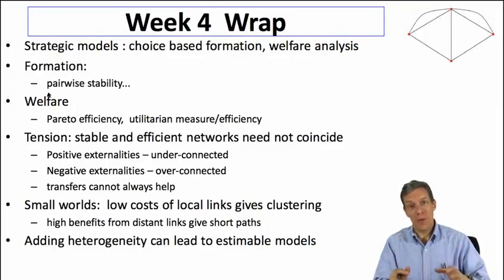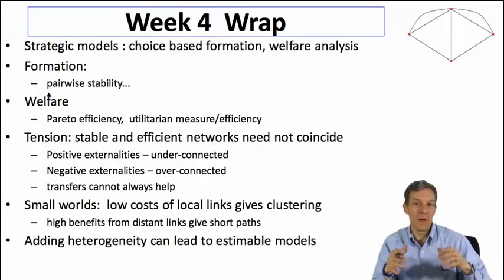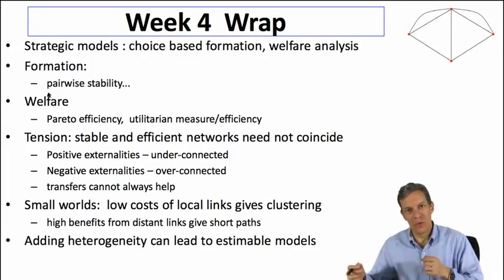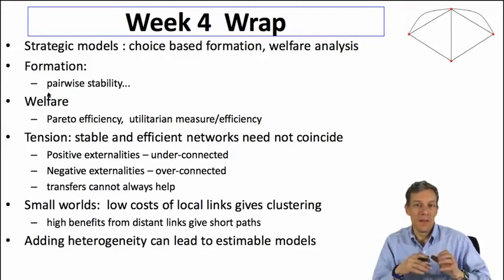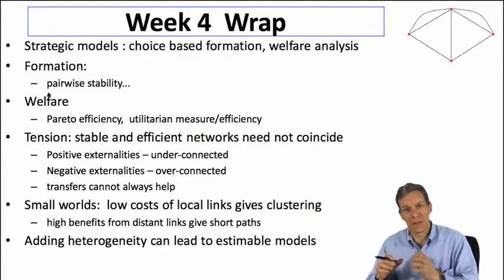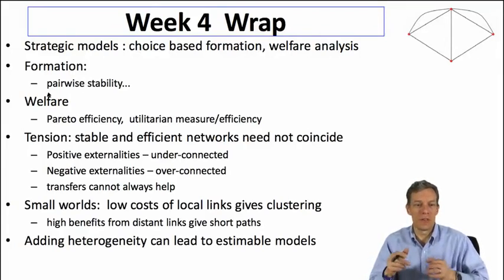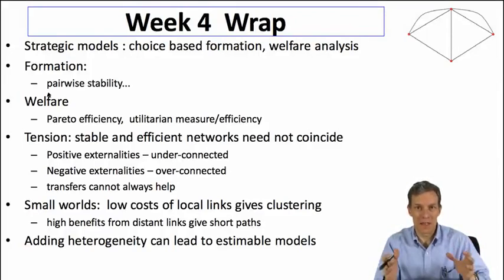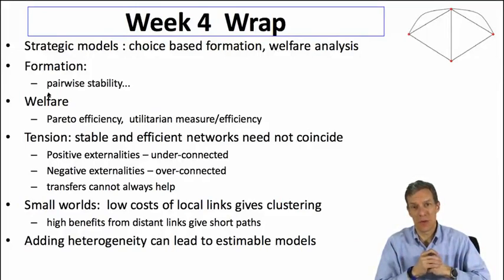These kinds of models can help us explain observed phenomena. Going back to the small worlds phenomenon, we now get a 'why' kind of answer. The low cost of linking to individuals who are very close to you — socially or geographically — means you tend to have high clustering, since individuals with similar characteristics will all tend to be friends with each other. High benefits from long-distance connections means you can still have short average path lengths.